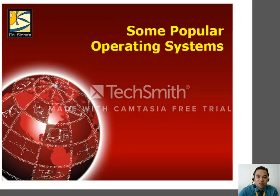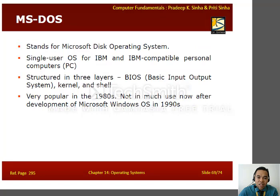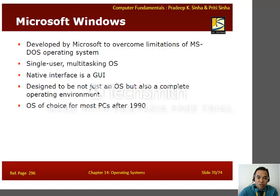Popular operating systems include Unix, developed in 1970 at Bell Laboratories by Ken Thompson and Dennis Ritchie. It is written in C language and is a multi-user, time-sharing operating system. MS-DOS stands for Microsoft Disk Operating System; it is a single-user OS for IBM and IBM-compatible personal computers with three layers: the basic input-output system, kernel, and shell. It was popular in the 1980s before Microsoft Windows.